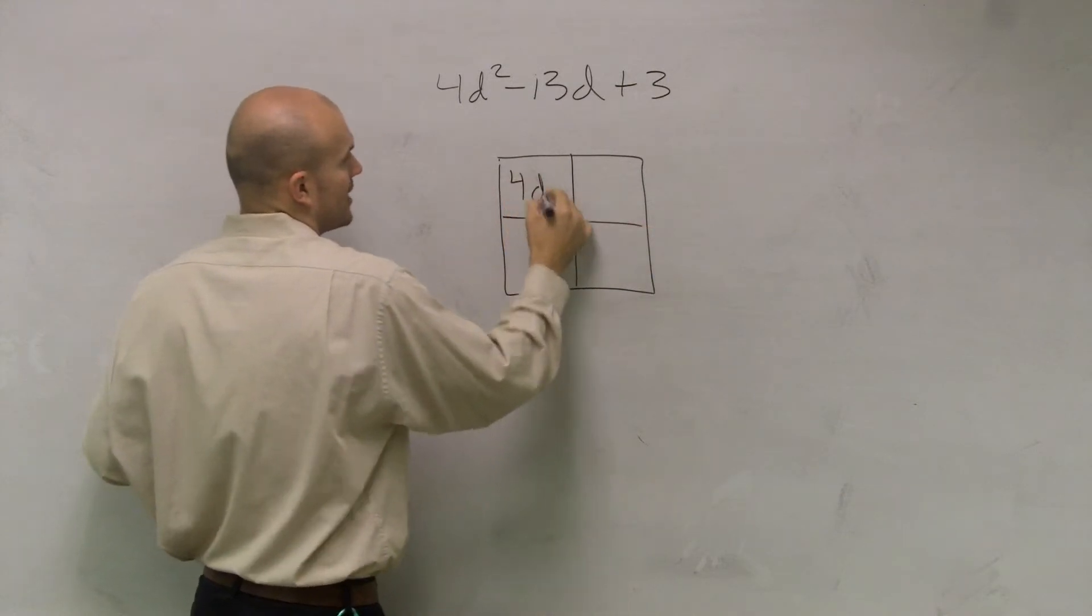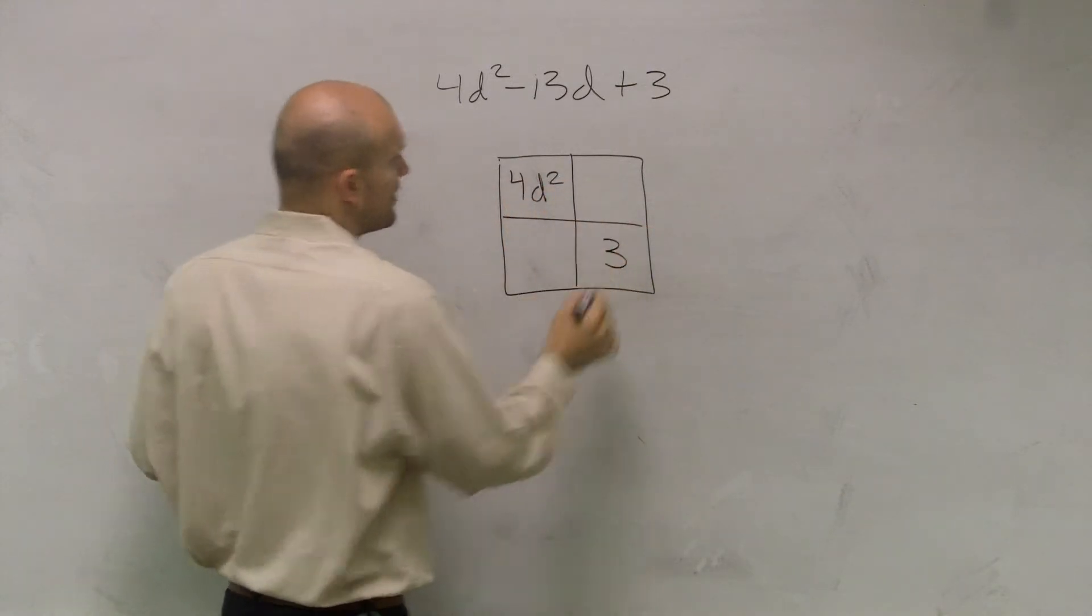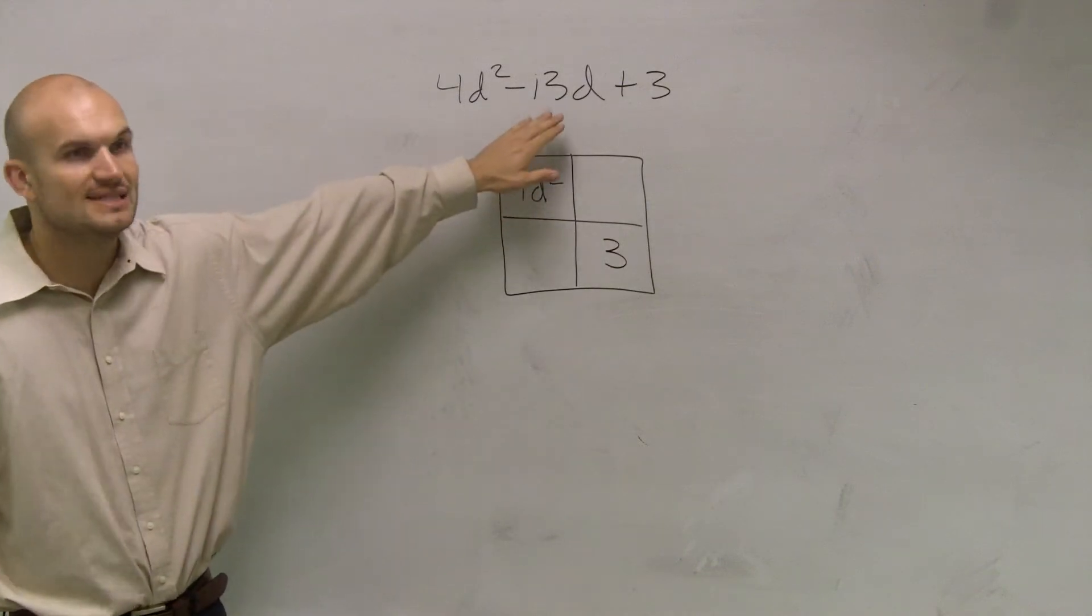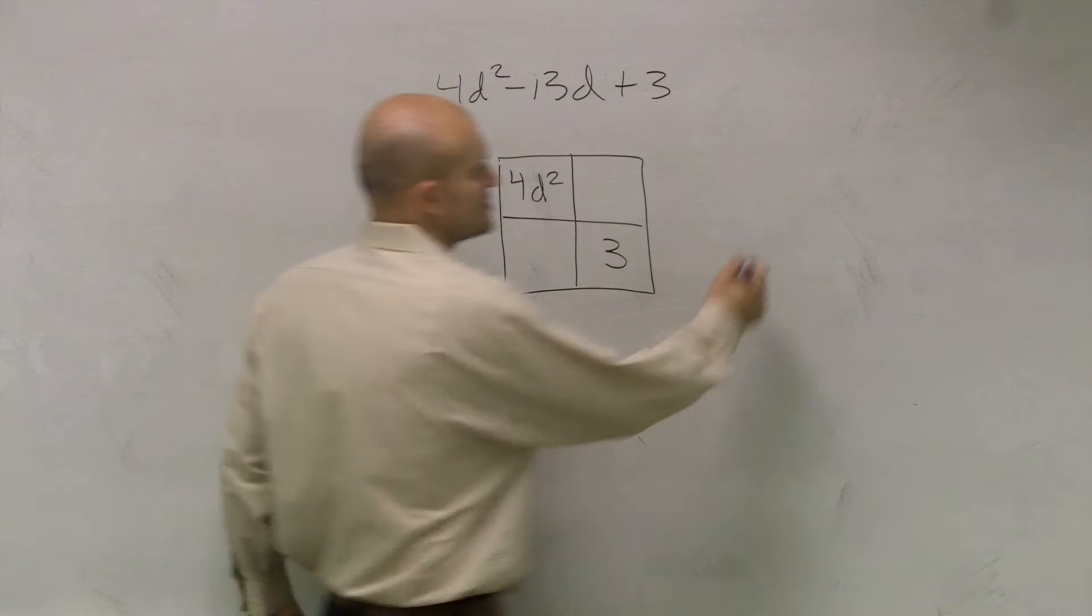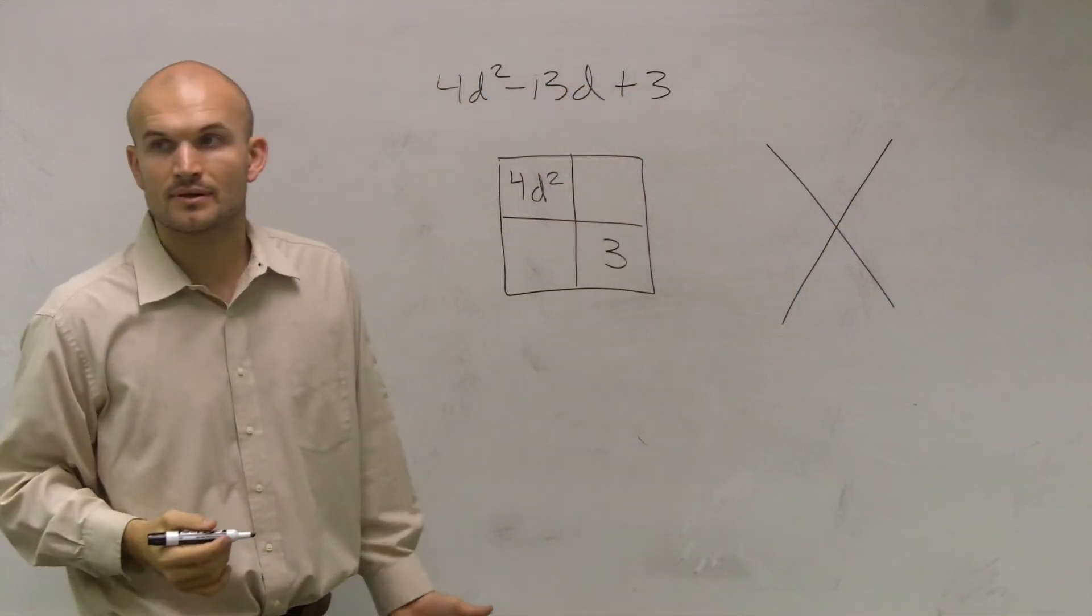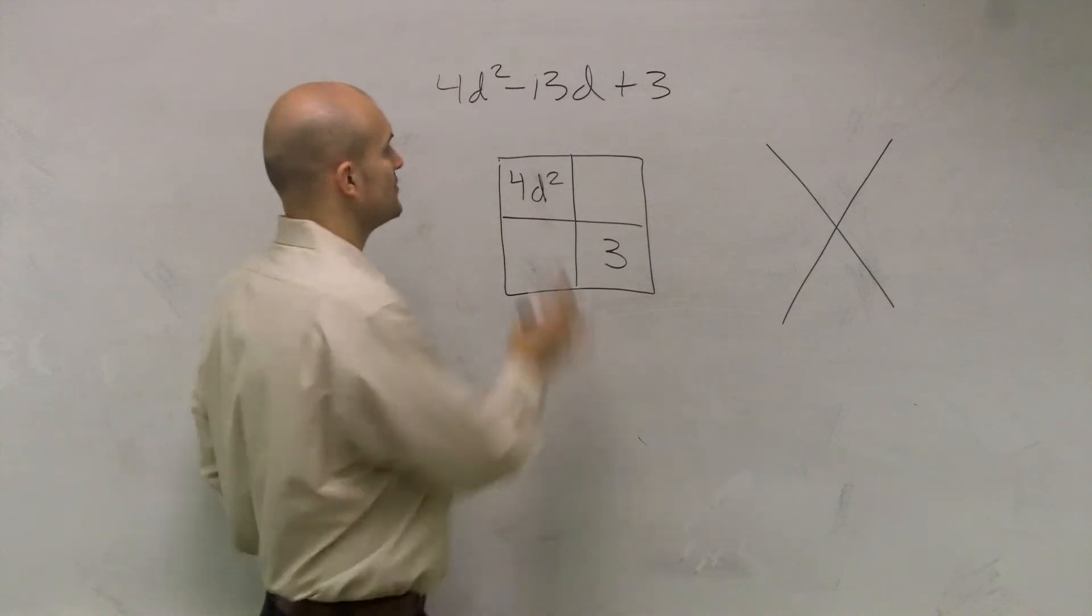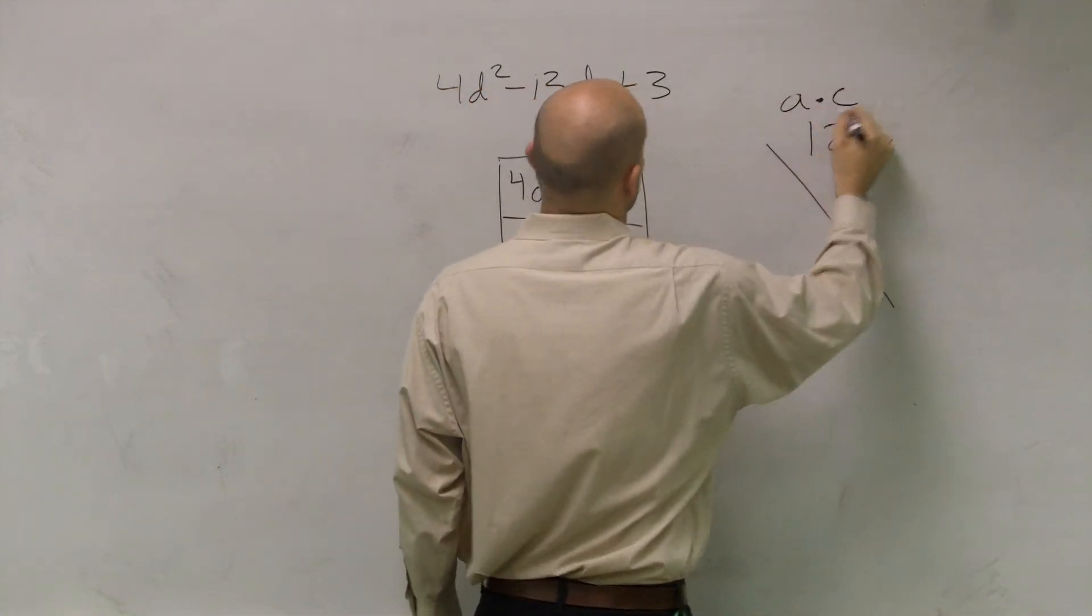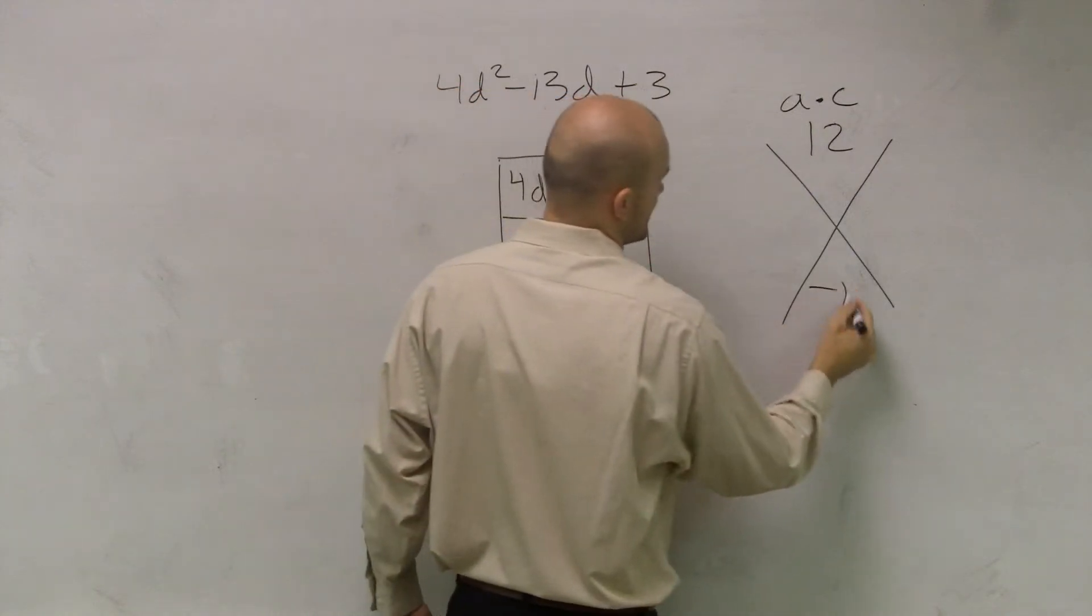So I'm going to say 4d squared up here and a positive 3 down here. Now, we don't know what our negative 13d is. And what we do to help us with that is to use our X that you guys have used before. Now remember, our X, we need to make sure we do a times c, which is 12, 4 times 3, and then a negative 13.